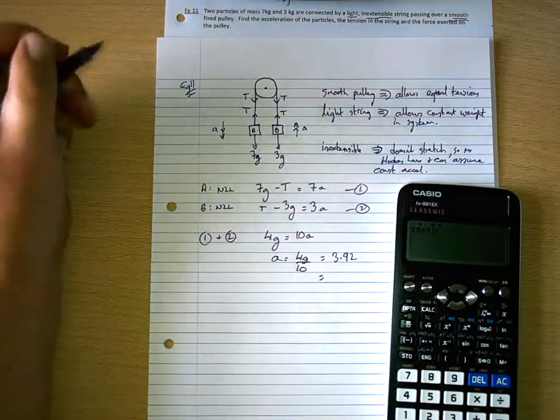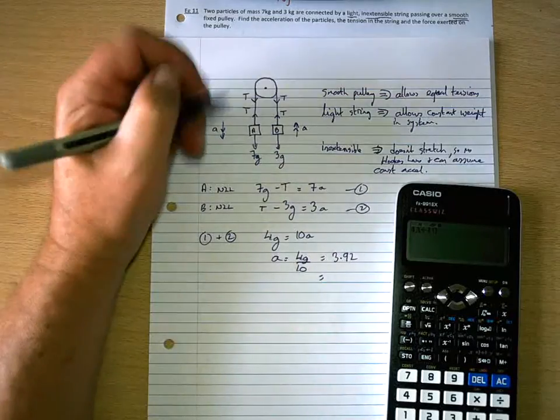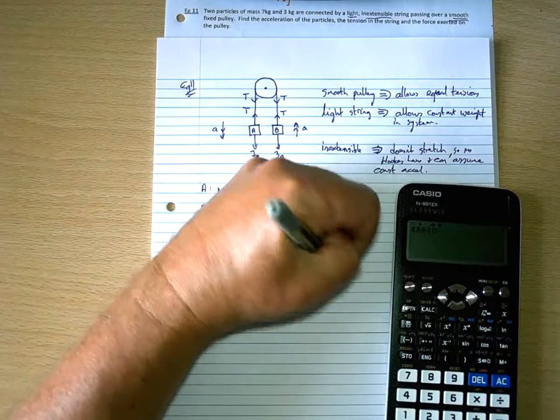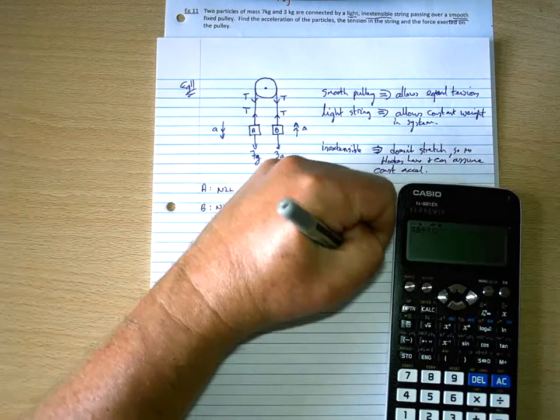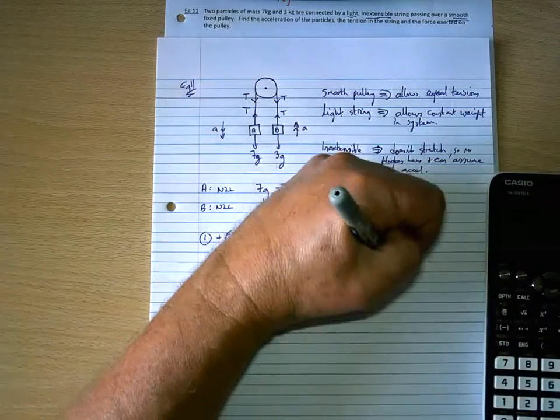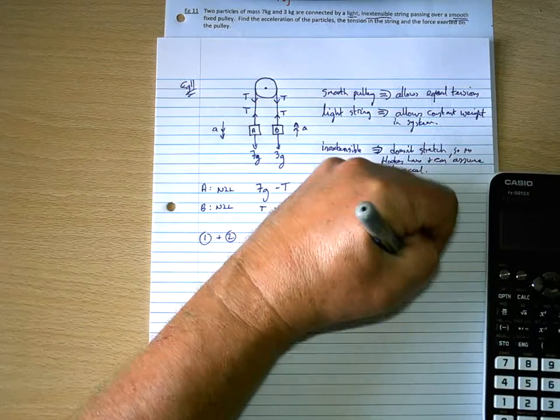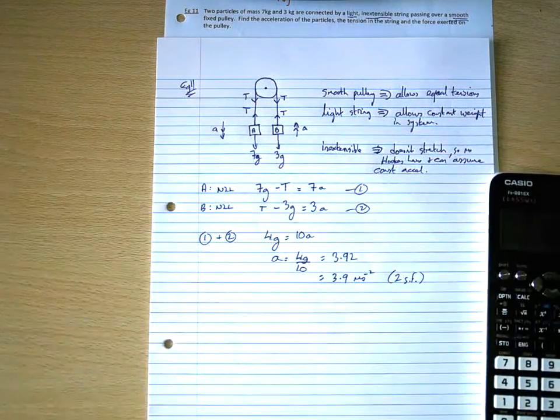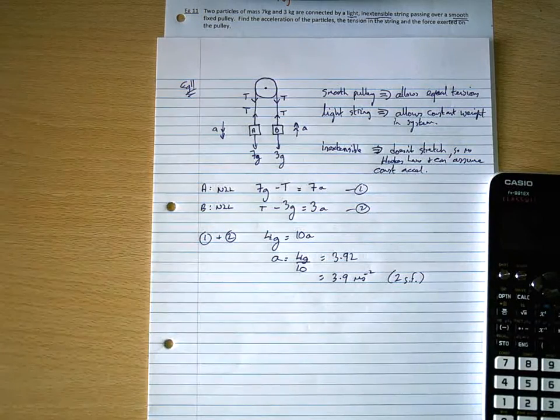So, two significant figures, because we're using 9.8. That would be 3.9, and the units for acceleration is meters per second squared, 2sf. So, that is the acceleration.